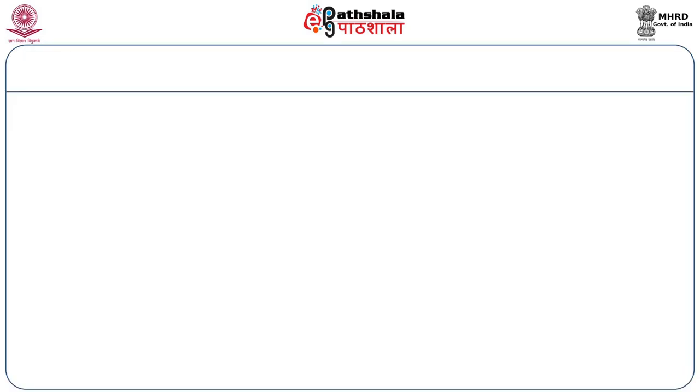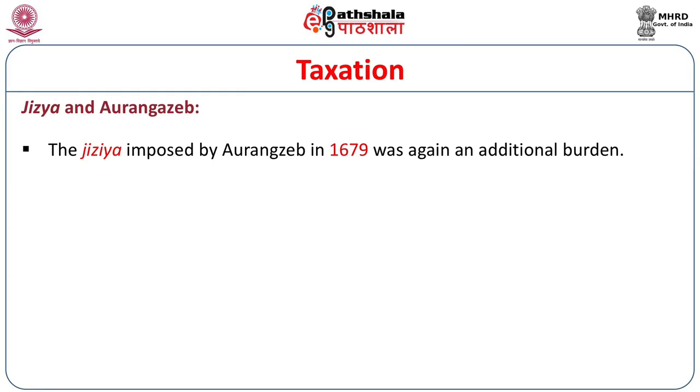There is another issue which needs to be discussed — that is Jizya and Aurangzeb. It has sometimes appeared as a controversial issue in the course of medieval history. We have to understand that Jizya as a tax was formally abolished by Akbar. Jizya as levied by the rulers was a kind of rural tax taken from non-Muslims. Aurangzeb imposed the Jizya in 1679 as an additional burden.